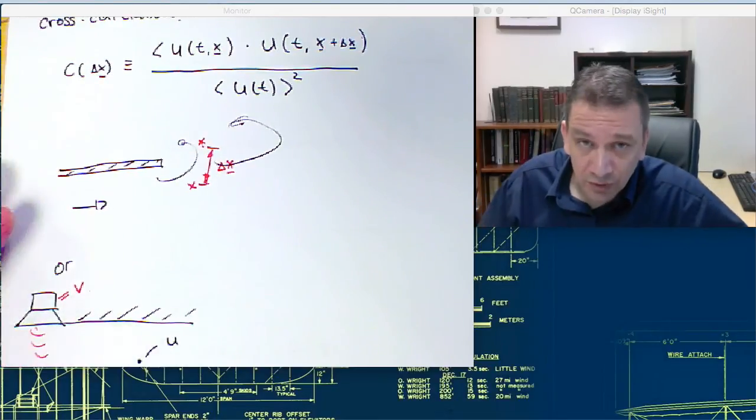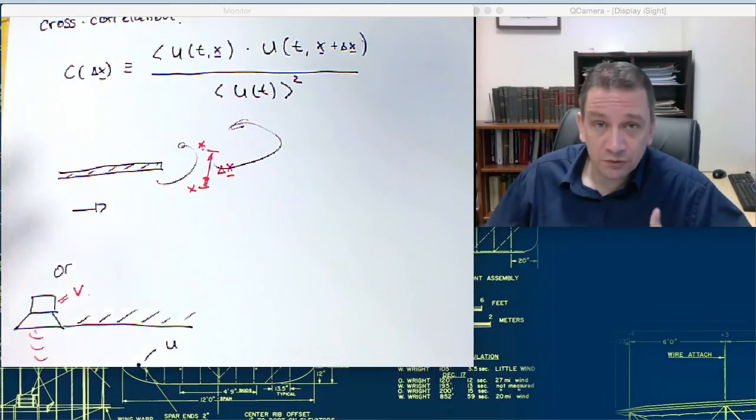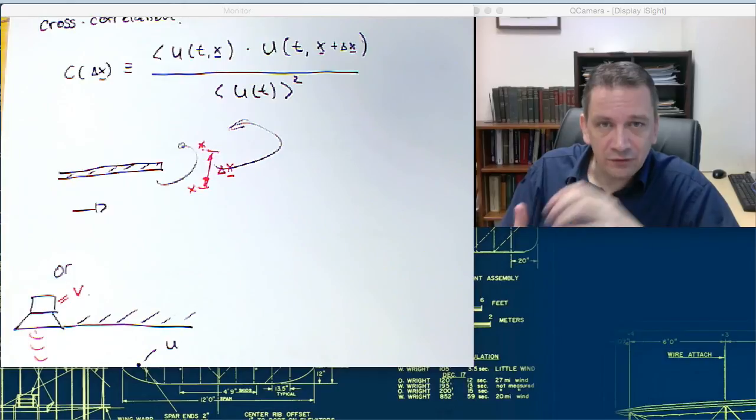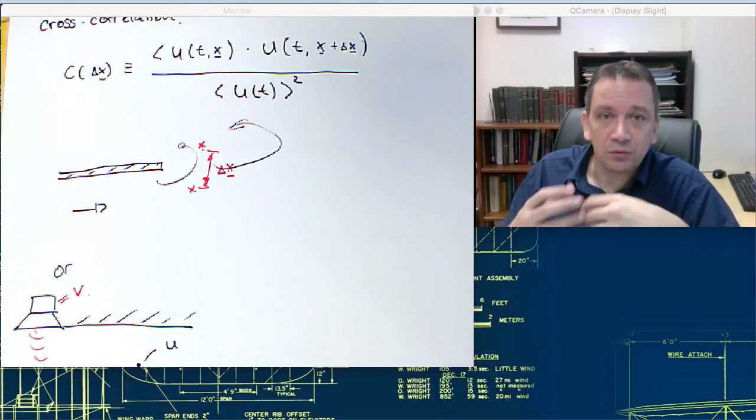All right. So, autocorrelation and the cross-correlation are useful tools for identifying how events within your turbulent flows are related to each other.